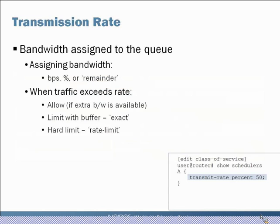Transmission rate is the bandwidth assigned to a given queue. You can assign bandwidth as a function of bits per second, as a percentage, or you can use 'remainder' — simply whatever is left for the queue that isn't assigned yet. In the bottom right you can see a sample configuration under the class of service stanza in the schedulers section, where we've entered a transmit rate of 50% as an example.